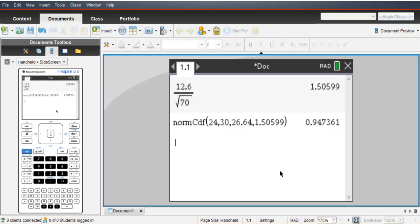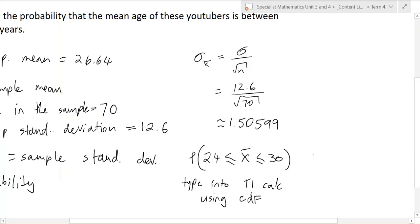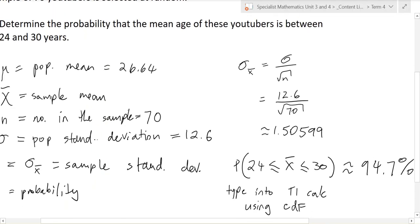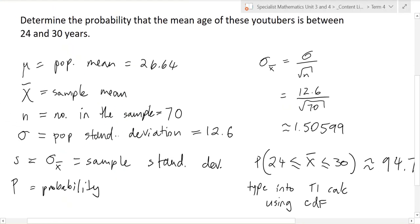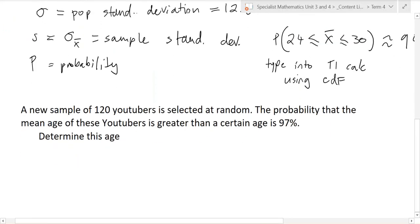And the standard deviation. Using CDF, it's approximately 94.7% chance. That's the mean is in those age limits.